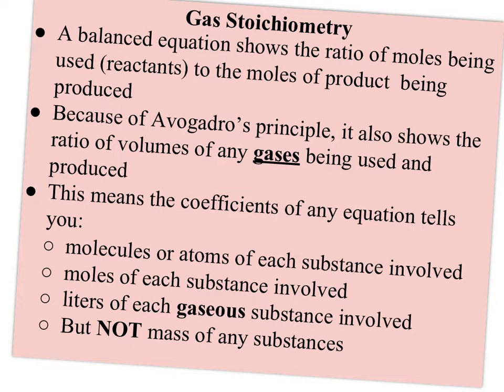The one thing an equation can't tell us directly is the mass of any substances. That's where stoichiometry comes in. We need to be able to convert back and forth between grams and moles, or in this case, liters and moles.